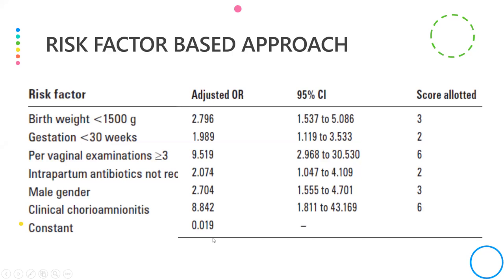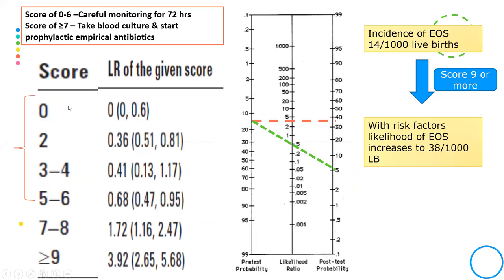Based on odds ratios for sepsis risk, a scoring system was developed. With a score of 0 to 6, babies can be monitored clinically for 72 hours. If the score is 7 or more, empirical antibiotics should be started. Using Fagan's nomogram with a baseline incidence of 14 per 1000, a high score increases post-test probability to around 38%, justifying antibiotics, while a low score reduces risk to about 3 per 1000.